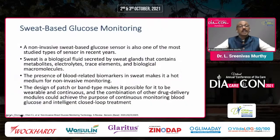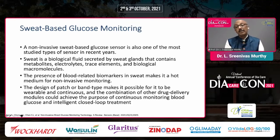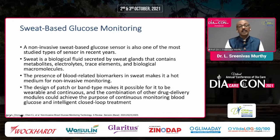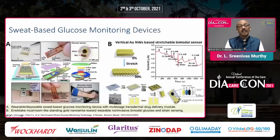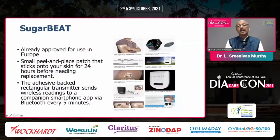Non-invasive CGMs represent upcoming game-changing technology. Sweat-based glucose monitoring is one such innovation — the presence of blood-related biomarkers in sweat makes it a promising medium for non-invasive monitoring. A patch or band-type design enables continuous monitoring with potential combination with drug delivery modules applied to the skin. SugarBeat, already approved in Europe, is a small peel-and-place device for 24-hour use. Its adhesive-backed rectangular transmitter sends wireless signals through a smartphone app, picking up readings every five minutes.